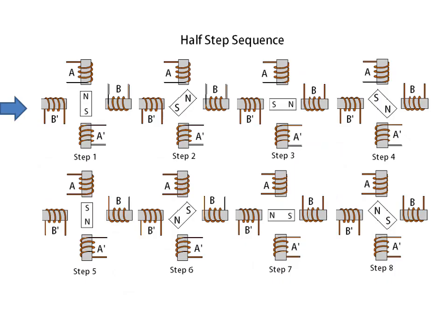Here we have the step sequence. We energize coil A, then A-bar, then B, then B-bar, and back to A depending on the sequence — the rotor rotates accordingly. At step one, the north and south poles are placed in one position; at step two, it produces a 45-degree rotation, continuing to 90 degrees and so on. By step five, the polarity is reversed — coil A is de-energized, coil B is energized, and so on. Using this sequence, we get eight steps per single revolution of the rotor.